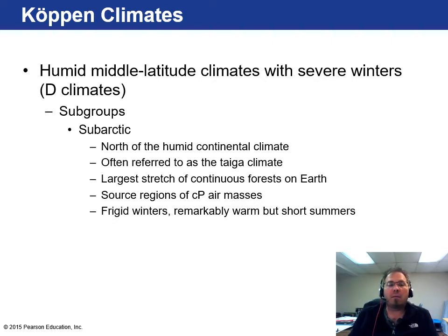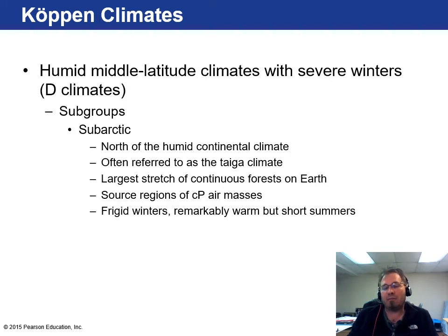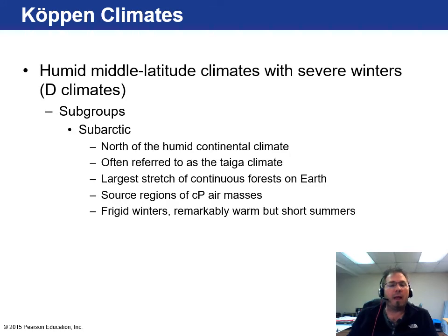The subarctic climates are north of the humid continental — that's even further north than us, up in Canada. Canada has the largest stretch of continuous forests on Earth in this particular climate. Think Canada, think Russia. You get cold air masses that come down and chill us off in the winter. These areas have frigid winters but remarkably warm, though short, summers. A lot of northern Canada is like that — they'll get some really warm days in summer, and then the bottom drops out in the middle of winter and it gets super cold.